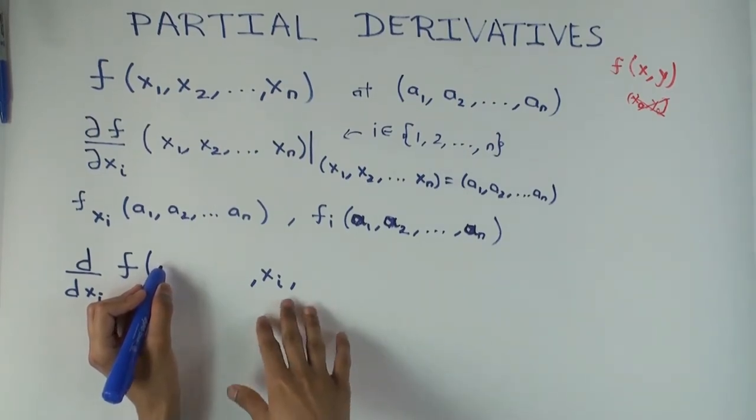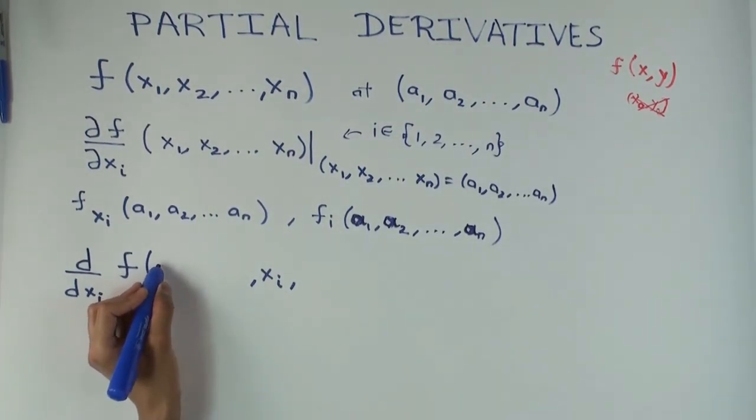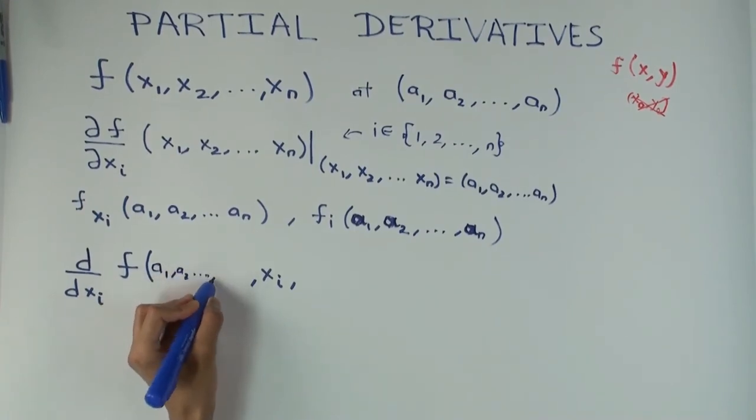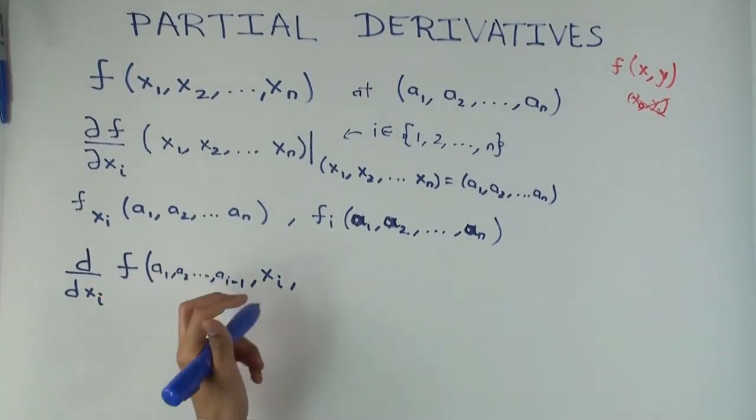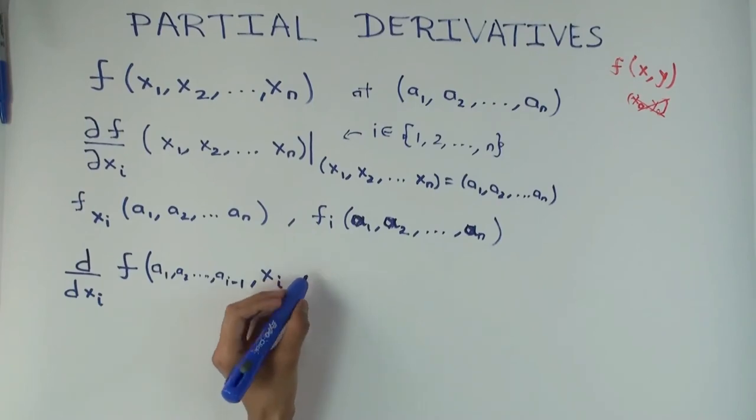So all the other coordinates will just become the corresponding ai value. So I'm assuming this i is somewhere in the middle, but if it were at the end, it would just be somewhat similar. But you have a1, a2 till ai minus 1. I mean the notation would be a little different if i were 1, but it would be the same.